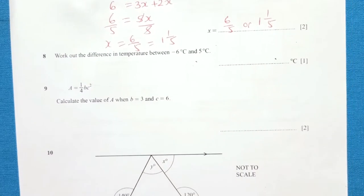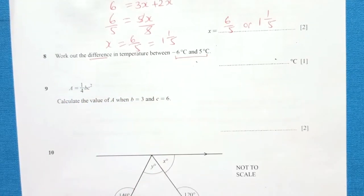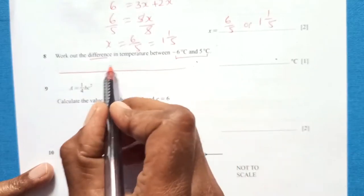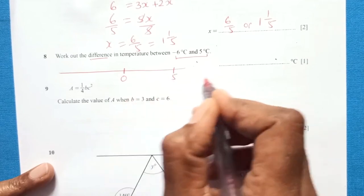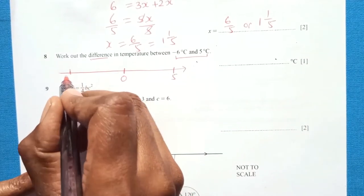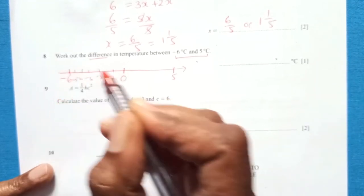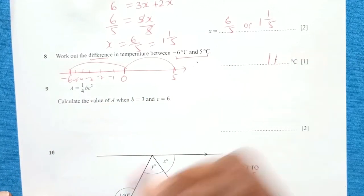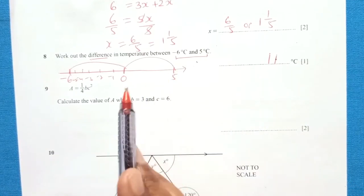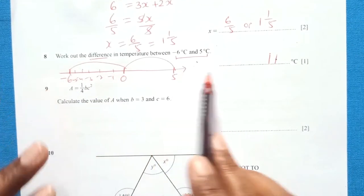Question 8: work out the difference in temperature between negative 6 and positive 5. Using a number line — zero is in the middle, 5 is on the right, and negative 6 is on the left. You have 6 units on one side and 5 on the other, so the difference is 11. No sign is written — the answer is 11.